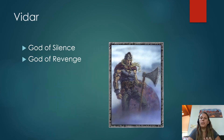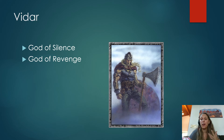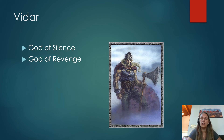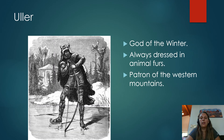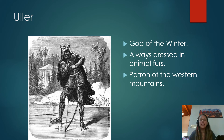Vidar is one of Odin's sons — the God of Silence and Revenge. Everybody has very specific roles to play in Ragnarok, and his job is to kill the wolf Fenrir as revenge for what happens to his father Odin, and to survive that killing. Ullr is a God of Winter, always dressed in jaunty animal furs and depicted with ice skates. He's a patron of the Western Mountains and is Sif's son — not Thor's son — making Thor his stepfather. Complicated family relationships in Norse mythology.